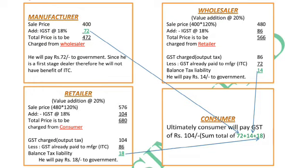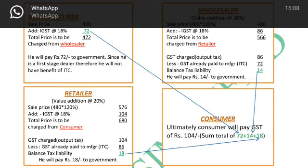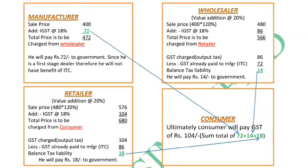The wholesaler's output tax is 86, which he has collected from the retailer. However, he had already paid 72 to the manufacturer, so he gets the input tax credit of 72. After utilizing this ITC, his actual tax liability comes out to only 14 rupees, which he will pay to the government.